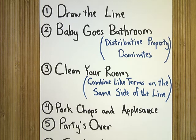The fourth step is pork chops and applesauce, if needed. That's if we have variables on both sides of the line after we clean up our room. We won't have that today.